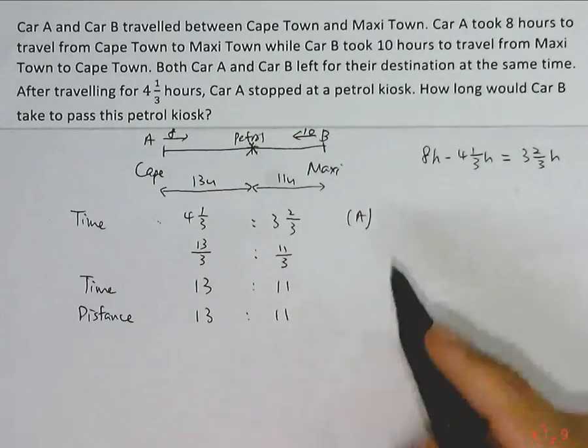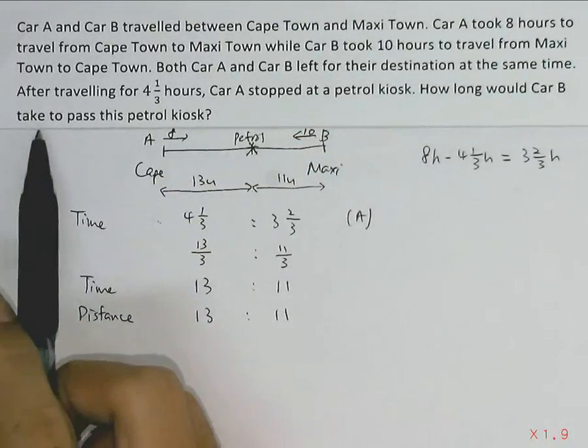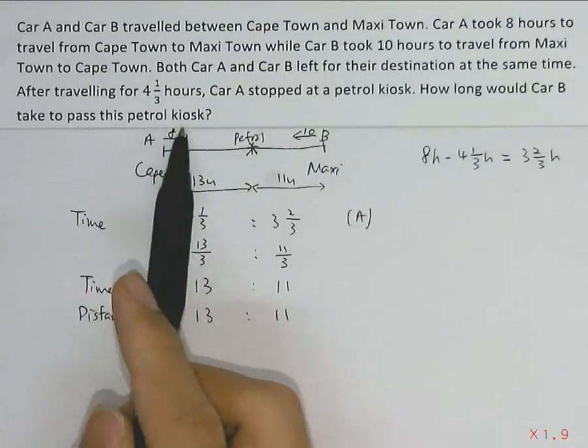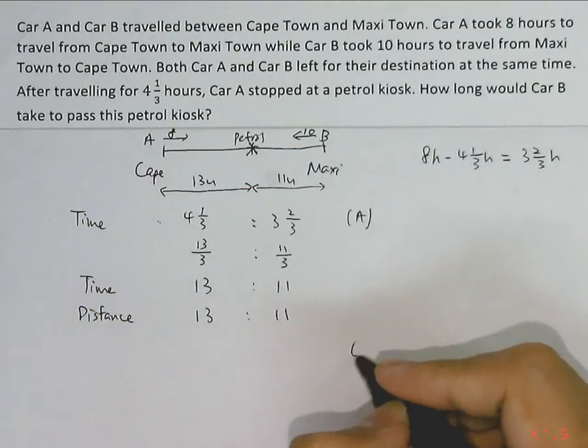Now the question asks for, how long would car B take to pass this petrol kiosk? Now we consider car B.